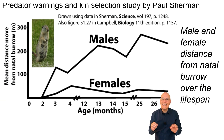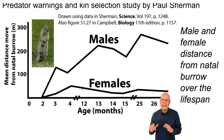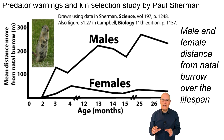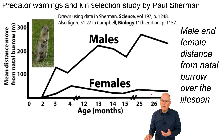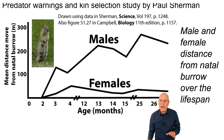With those concepts in mind, let's take a look at a study by Paul Sherman about predator warnings in Belding's Ground Squirrels, carried out in the 1970s. Notice this graph — it shows the mean distance that males and females move from their natal burrow, meaning the burrow where they were born. Females wander very little over the course of their lifespan. Even when these squirrels are 26 months old, which is quite old for a squirrel, they're less than 50 meters from their birth burrow. Males, by contrast, move quite a bit — by two years old they're up to about 280 meters away.